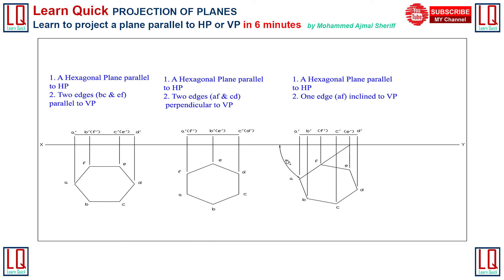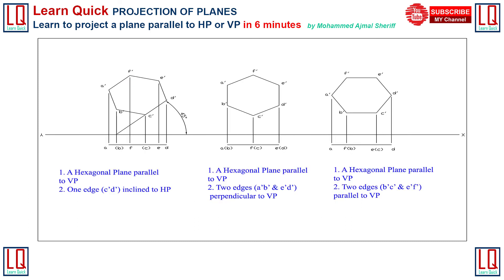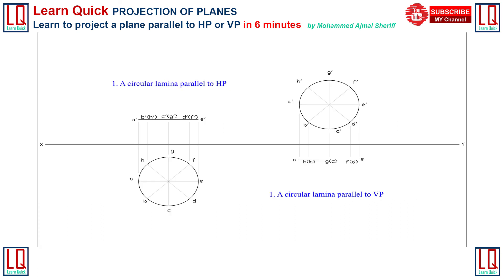When the hexagonal plane is kept parallel to the horizontal plane with its side AF inclined to the vertical plane, we obtain sides AB, BC, and CD visible in front view and corners F and E invisible. For similar cases we obtain the front view as shown when the hexagonal plane is kept parallel to the vertical plane. When a circular lamina is kept parallel to the horizontal plane, we obtain a straight line in front view. Similarly, when the circular lamina is parallel to the vertical plane, we obtain a straight line in top view. The circular lamina is segmented and arbitrary points are created, which facilitates the representation of inclination of circles in projection of planes using the change of position method.